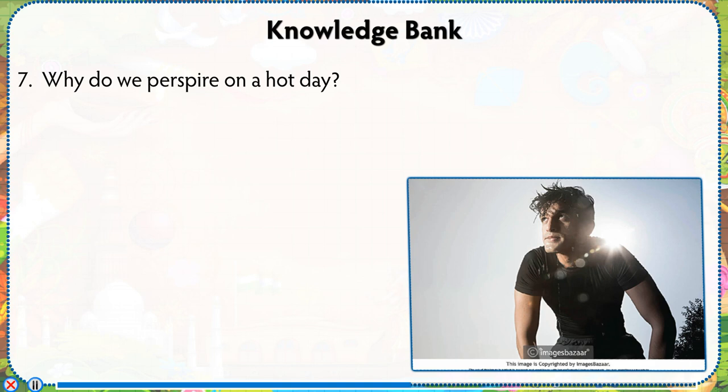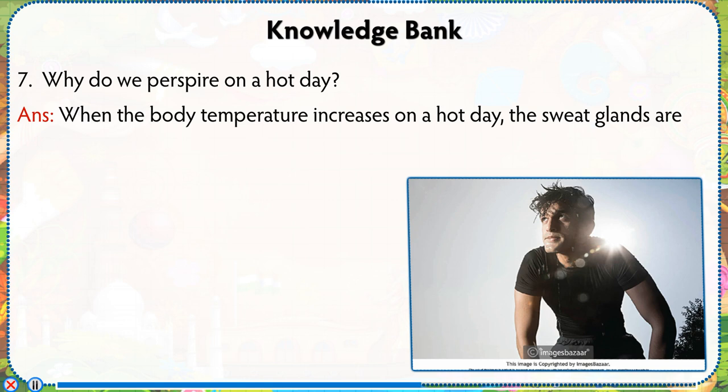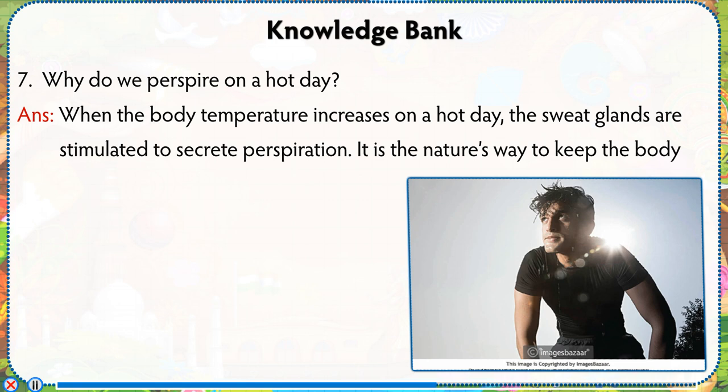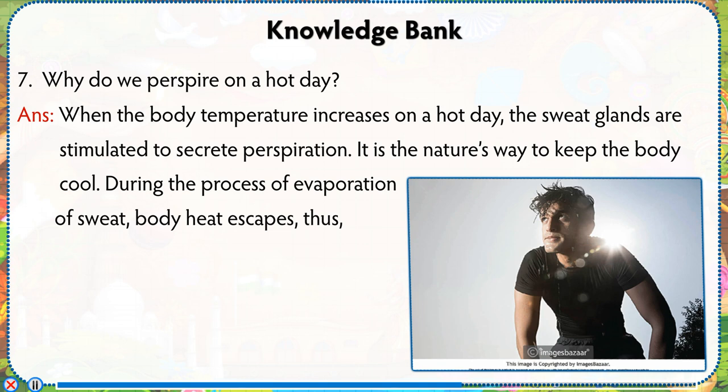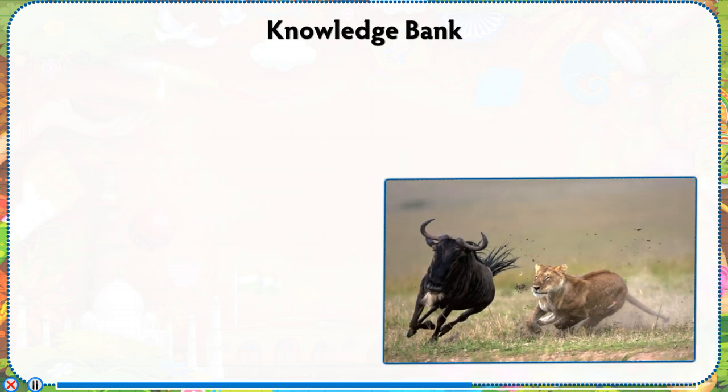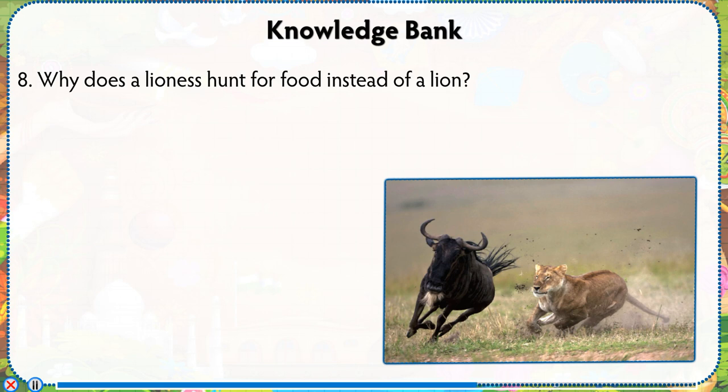Number 7: Why do we perspire on a hot day? Answer: When the body temperature increases on a hot day, the sweat glands are stimulated to secrete perspiration. It is nature's way to keep the body cool. During the process of evaporation of sweat, body heat escapes, thus giving a cooling effect.